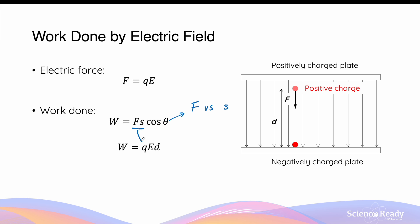We can substitute force with the expression QE, as this force is due to the electric field, and we can substitute S with the more commonly used symbol D, where D is the displacement of the charge due to the force. If the positive charge is initially placed in the electric field and travels a displacement D to reach the negatively charged plate, then D is what we use to calculate work done. The angle between the force vector and displacement is always zero because they are always parallel in an electric field. So we obtain the final expression for work done on the charge: W = QED.